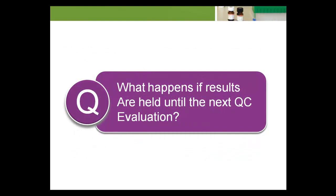What happens if results are held until the next QC evaluation? Instead of all the results being compromised, the error would have been detected, corrected, reported, and the patient specimens reprocessed before they were reported. Holding patient results until the test method has been checked with a subsequent QC evaluation is one of the best ways to prevent a test system failure that occurs after the last successful QC evaluation. Unfortunately, holding results may not be logistically possible. If results must be released as soon as they are produced, careful thought should be given to the number of unreliable reported patient results that can be tolerated in the event of a test system failure.